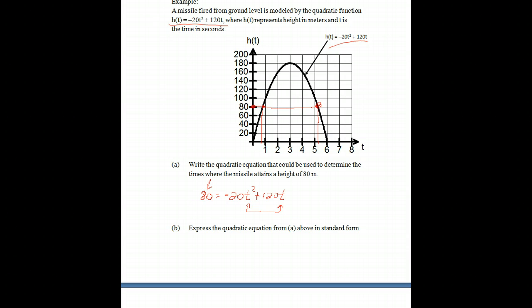Then we're asked to express the quadratic equation from A in standard form. So all that wants us to do is just bring the 80 over, so we have -20t² + 120t, we bring the 80 over, and it becomes -80 = 0.